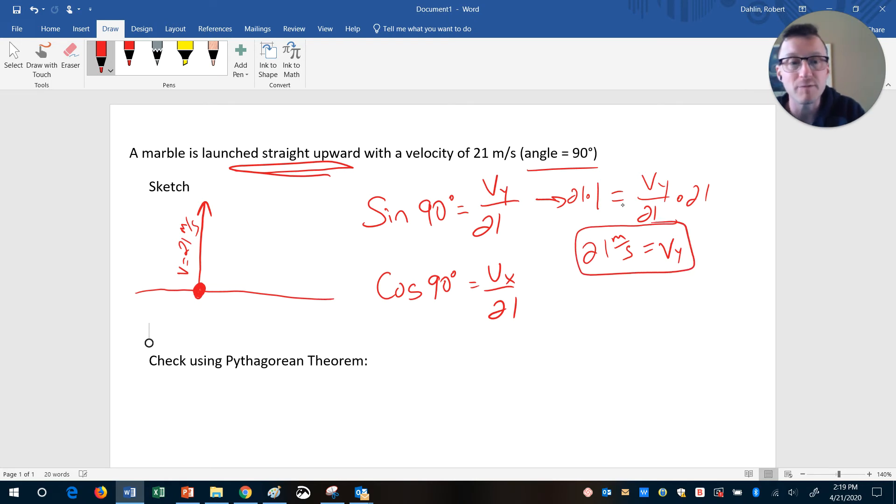Now, let's think of the X. Remember, X is the side to side. Well, if I do cosine of 90 on my calculator, what number does it give me? It gives me zero. So I'm going to end up with zero equals Vx over 21. And when I multiply both sides by my 21, what's going to happen? I'm going to get zero equals Vx.